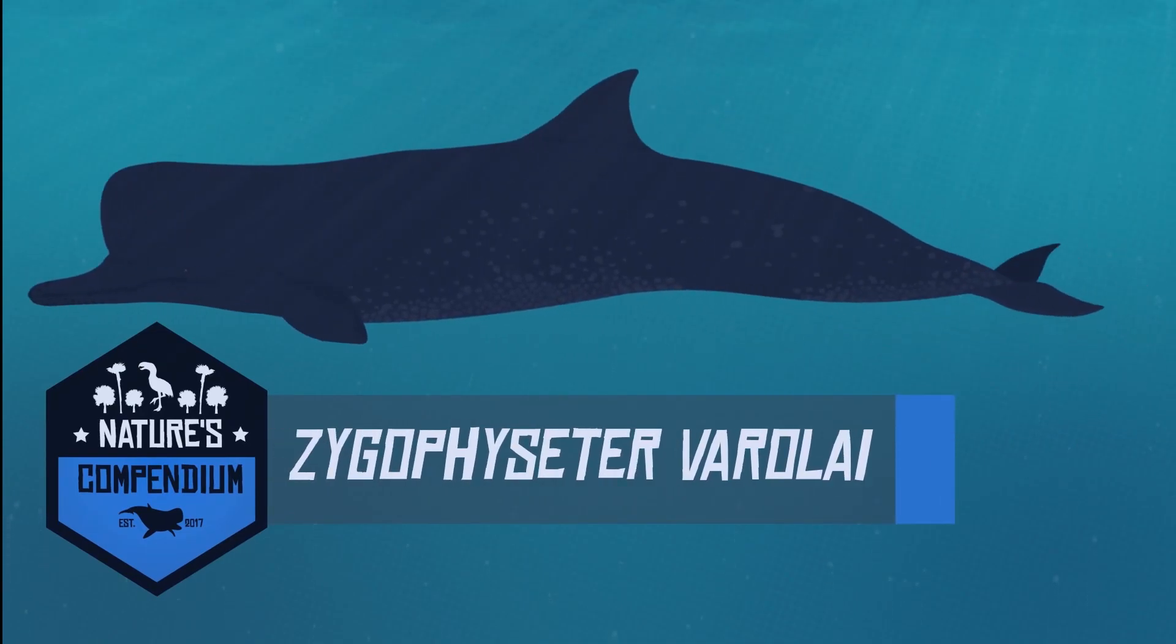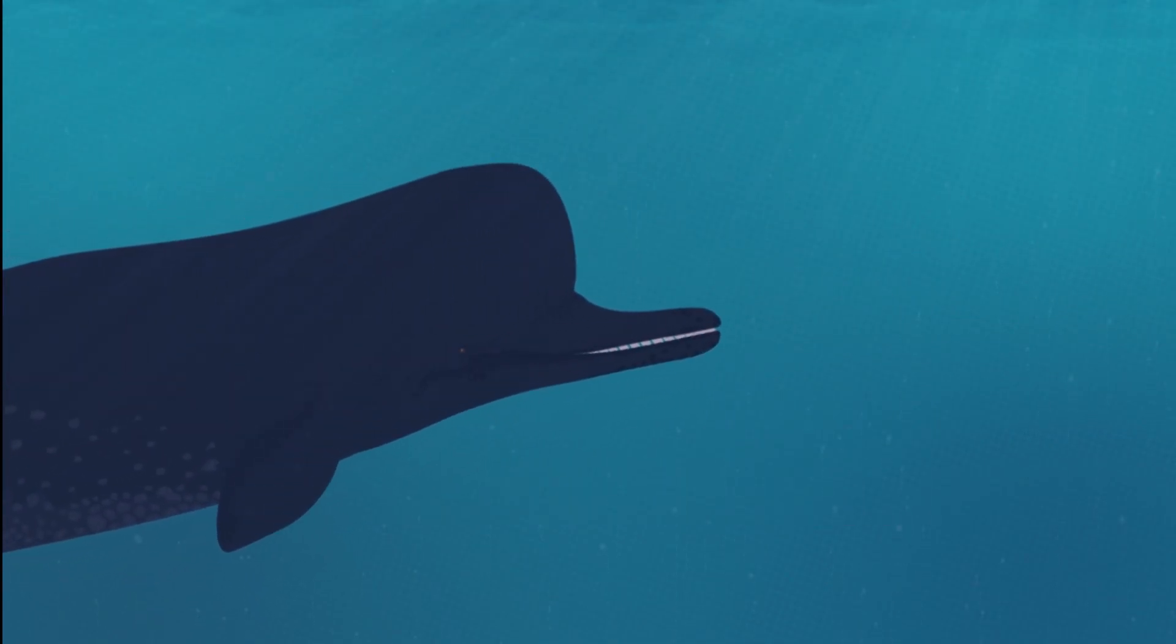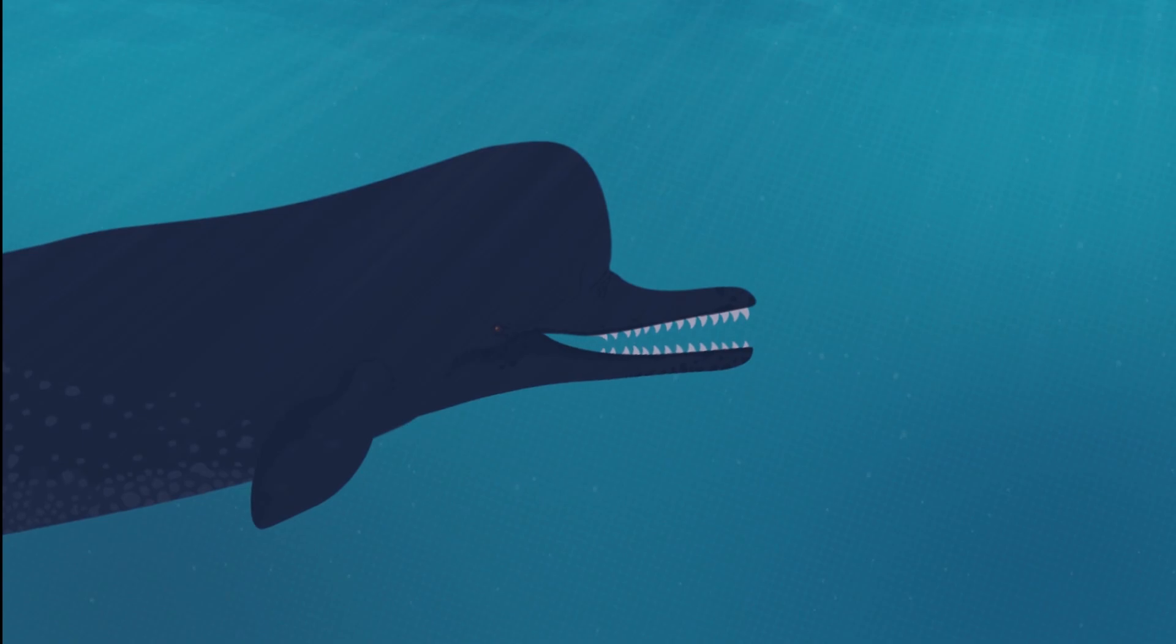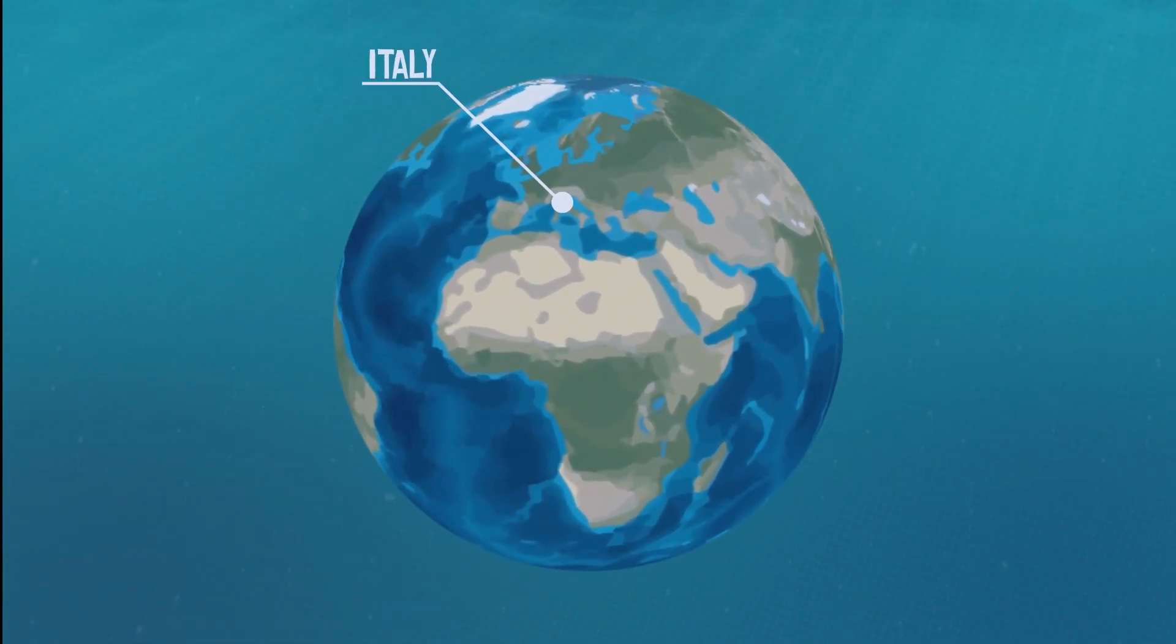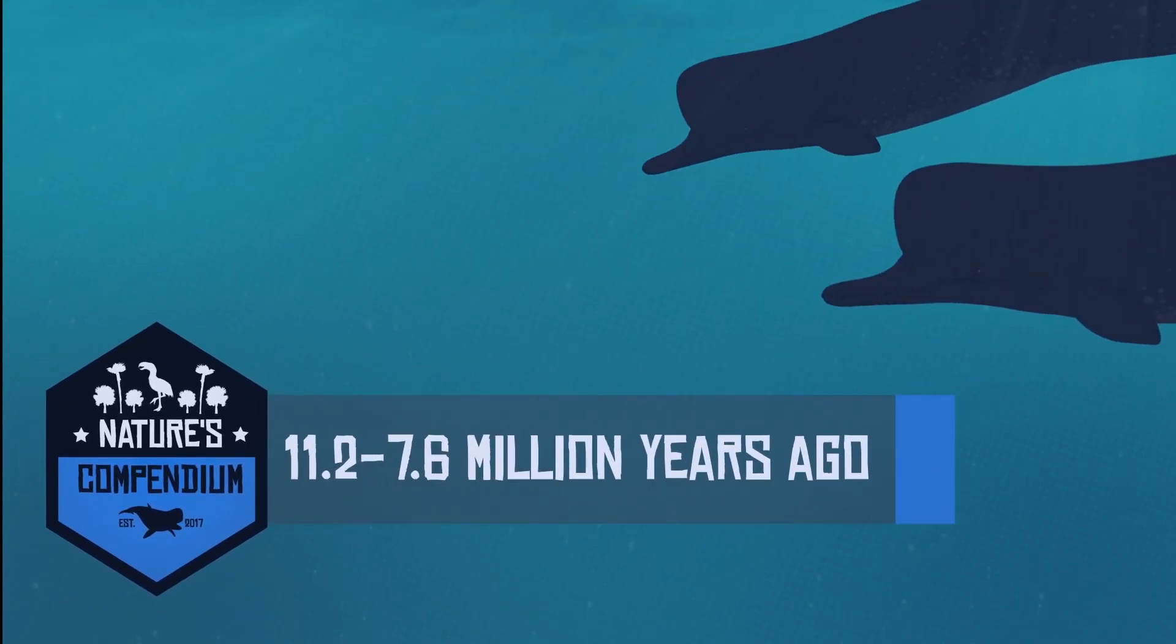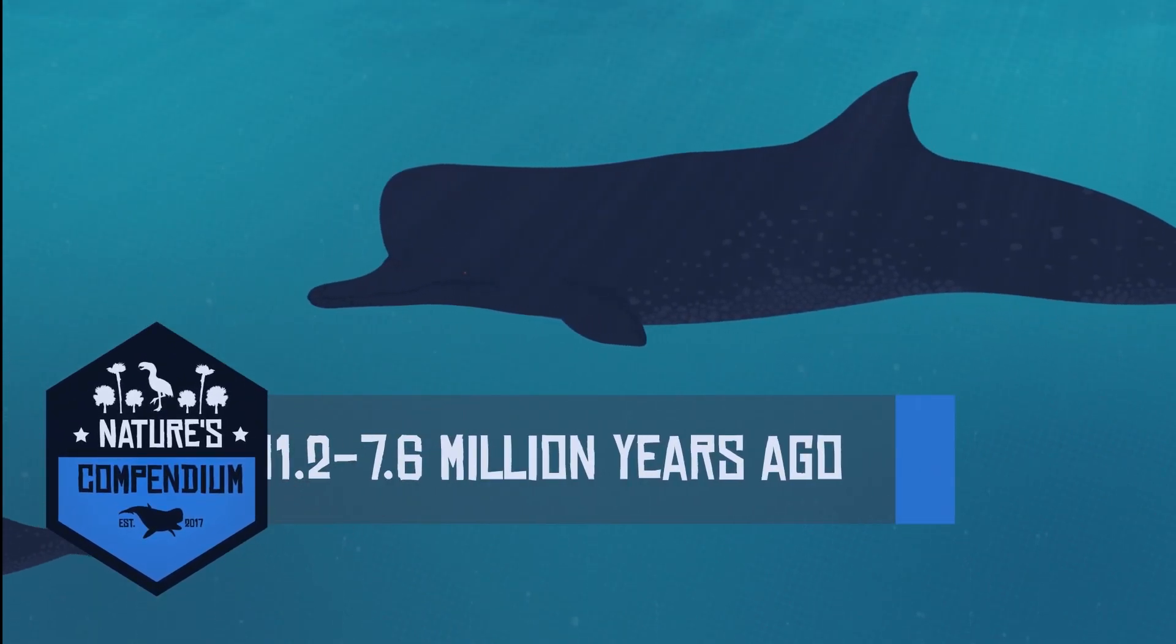Zygophyseter was a prehistoric sperm whale with an elongated snout, equipped with 13 teeth on the upper jaw and 14 teeth on the lower jaw. Zygophyseter was discovered in Italy and lived from 11.2 to 7.6 million years ago.